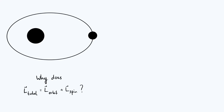Hello everyone. This is going to be a video about adding together different types of angular momentum in classical mechanics, and as an illustrative example, we're going to think about a system with just one planet orbiting one star. It could really be anything orbiting anything else, but that will just give us something concrete that we can refer to throughout the video.